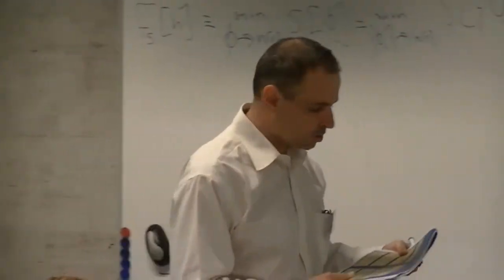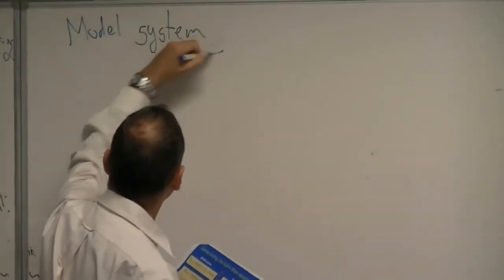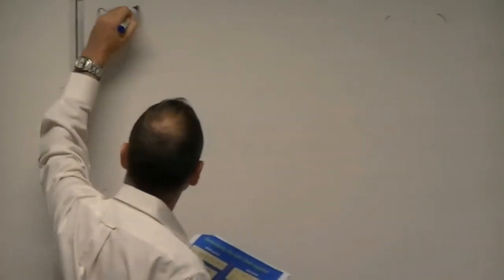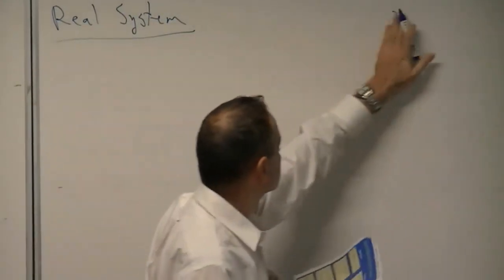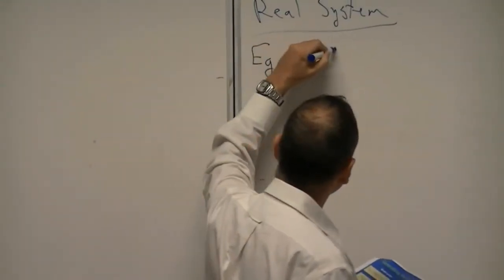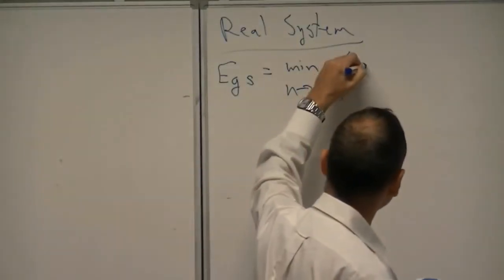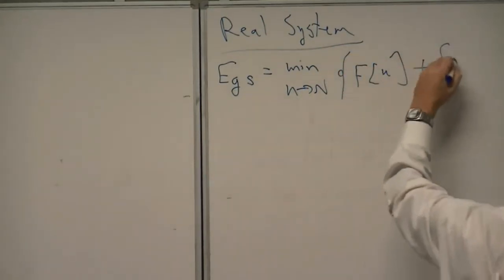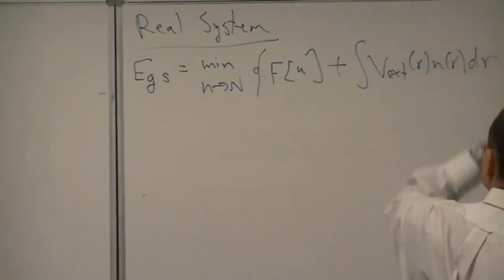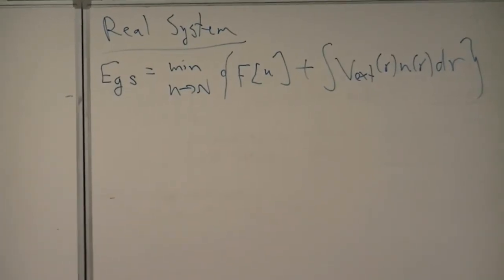With this, we are ready to generalize the Kohn-Sham equation. I'll use both boards: one for the model system — the fictitious system into which we map — and the other for the real system. In the real system, the ground state energy is given by a minimum over all densities integrating to the correct number of particles of F of n plus an integral over the external potential times n of r. F is the Hohenberg-Kohn functional.